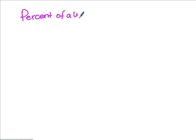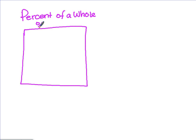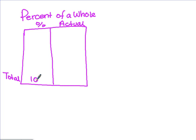In percent word problems, if we're finding percent of a whole, this is the chart that we're going to use. We're always going to have a percent column and we're always going to have an actual column. And we are always going to have a total. Total percent is always going to be 100, and then we fill in as the information is given to us. When we're finding percent of a whole, we're normally comparing two things. I'm going to call them x and y for the two tables, but we can label them according to what we're comparing. We'll take a look at that in example one.